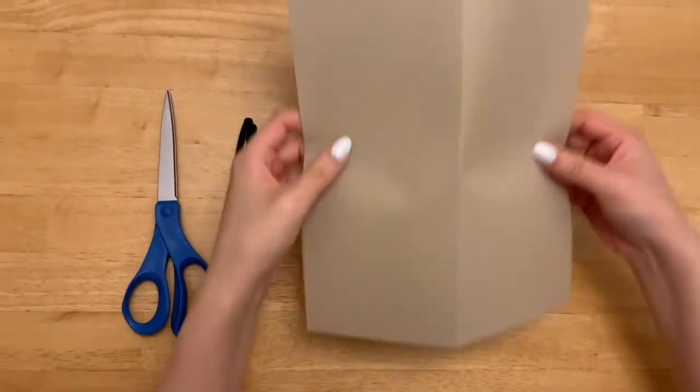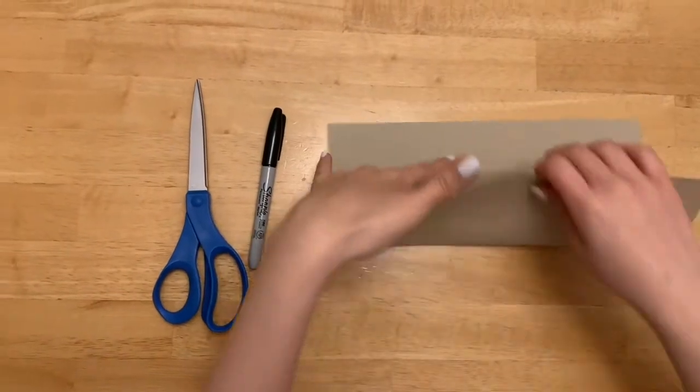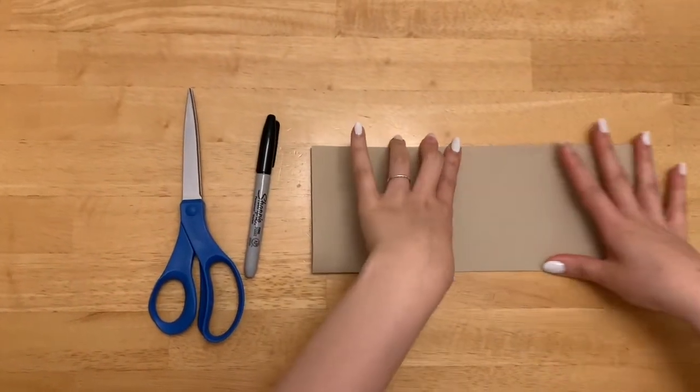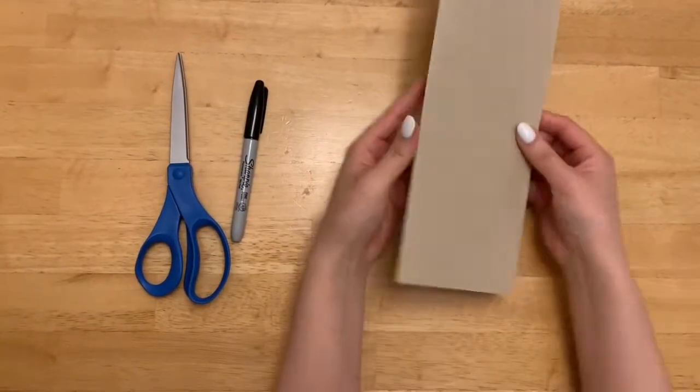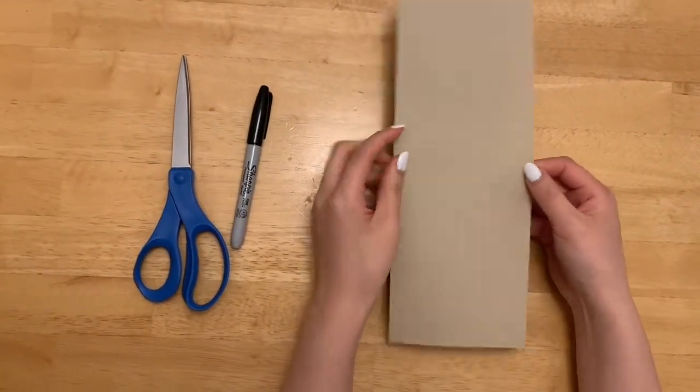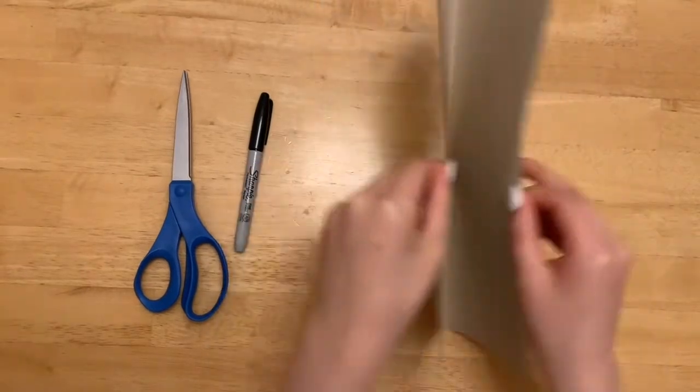First, we're going to start with our piece of paper and fold it hot dog style. That means the long way. Once you have folded the piece of paper hot dog style, I want you to open it like a book.